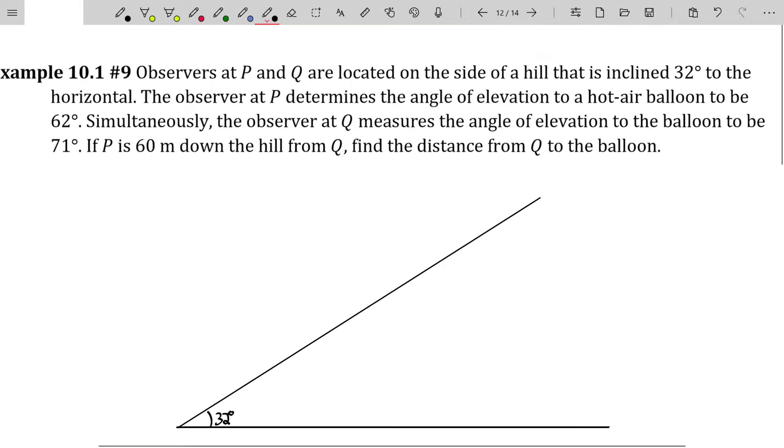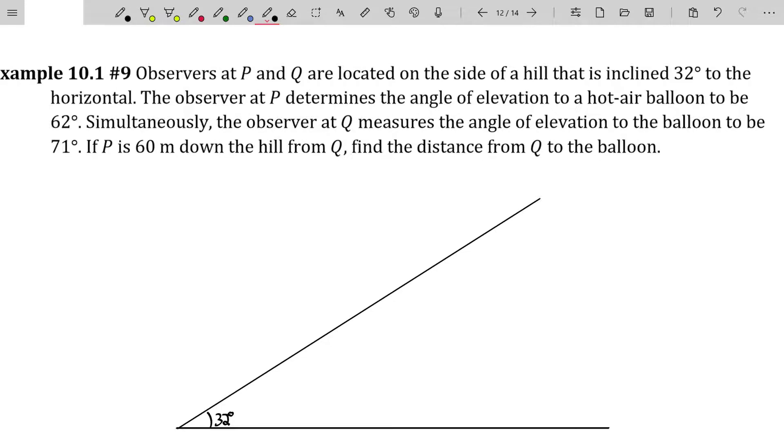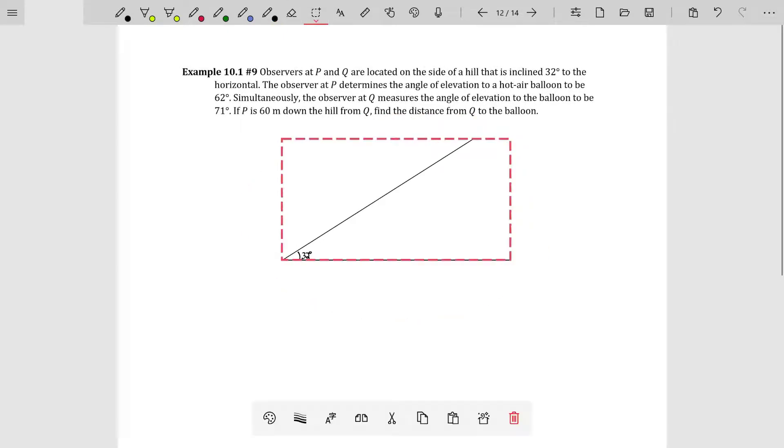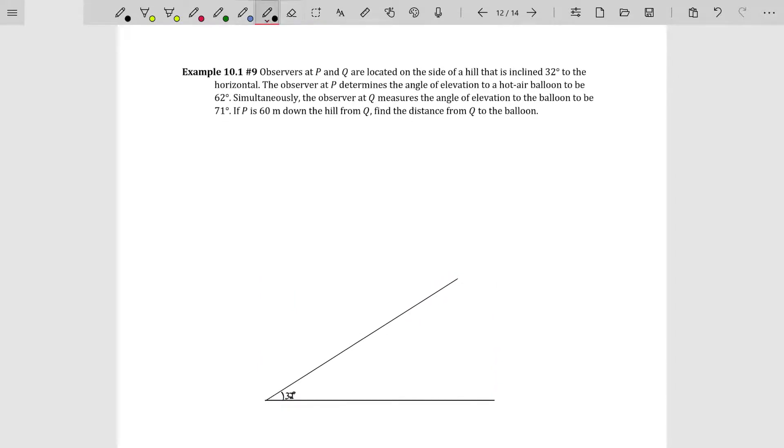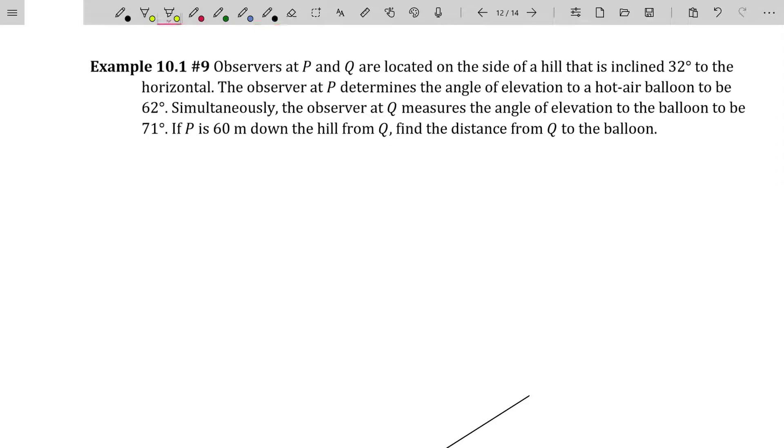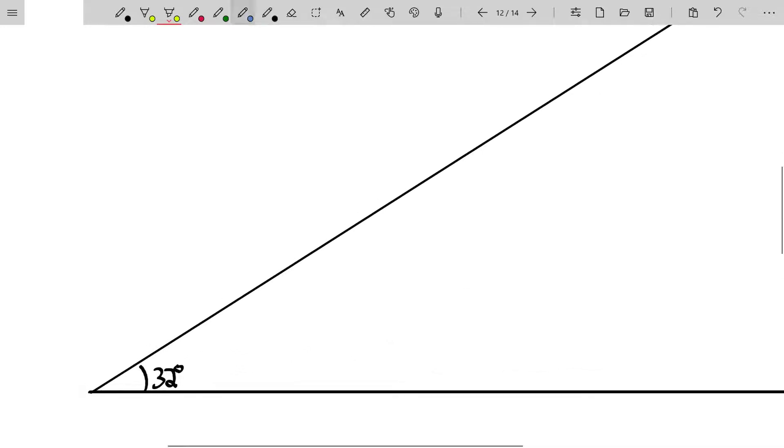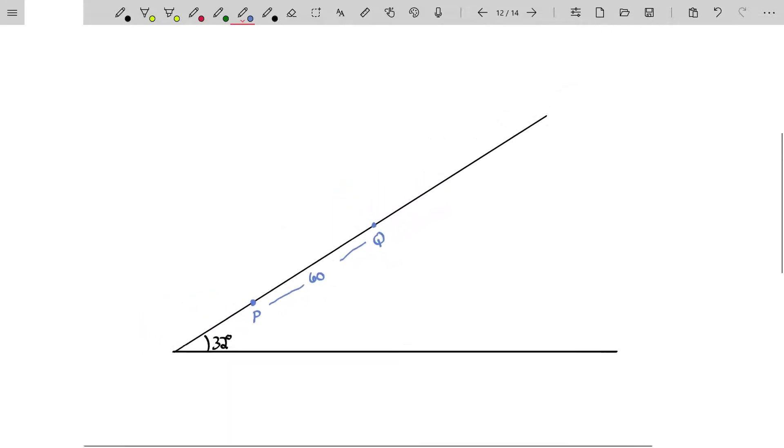There I'm just drawing in my 32 degree pitch right here. We have a couple of people on the side of this hill. So somebody at point P and somebody at point Q. The observer at P determines the angle of elevation to a hot air balloon to be 62 degrees. Simultaneously, the observer at Q measures the angle of elevation to the balloon to be 71 degrees. If P is 60 meters downhill from Q, find the distance from Q to the balloon.